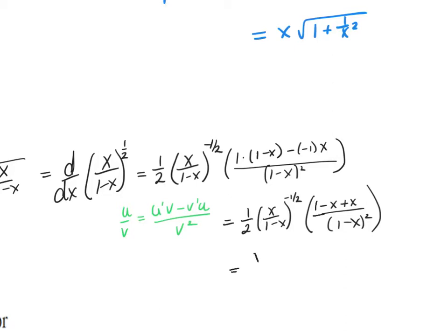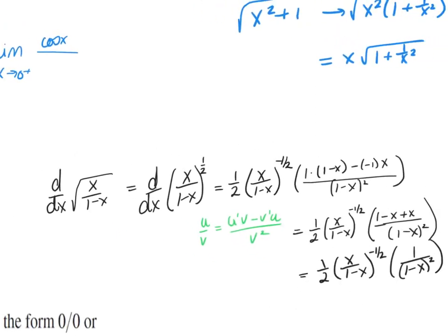So I end up with 1 half times (x/(1−x)) raised to the negative 1 half, and then 1 over (1−x) squared. That is what the denominator equals. So I'm going to go back and put that in the right place.